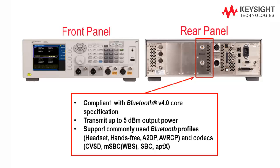The RF interface on the U8903B is able to transmit up to 5 dBm RF power. It also supports the commonly used Bluetooth profiles and codecs for Bluetooth audio devices.